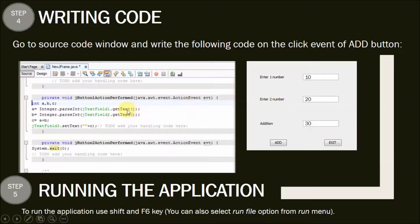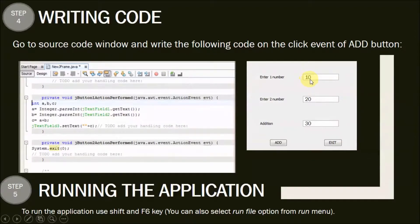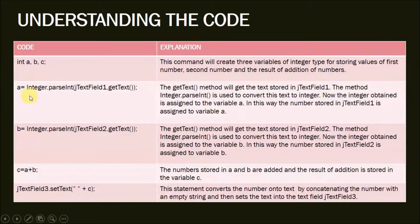Now let us understand this code in depth. The first statement, int a, b, c, creates three variables of type integer for storing the values of the first number, second number, and the result of their addition. The second statement, a = Integer.parseInt(jTextField1.getText()), uses the getText() method to get the text stored in jTextField1 — which is 10 in this example — and Integer.parseInt converts this text to an integer, which is then assigned to variable a, so a becomes 10.